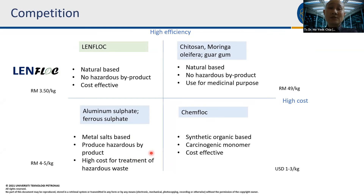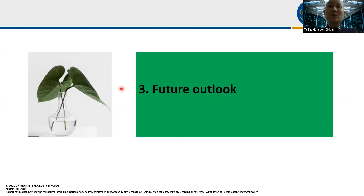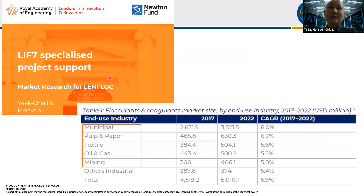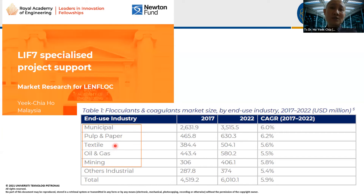For future outlook, this project has been supported by the Royal Academy of Engineering, and consultants have produced statistics showing a very good market size for natural coagulants. Applications include normal municipal water treatment, industrial use, and — relevant to Indonesia — textile industry and oil and gas industry wastewater treatment plants. Natural coagulants can be utilized across all these water and wastewater treatment sectors.